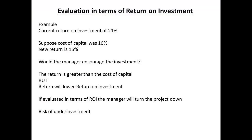We finished the first podcast by considering a problem with return on investment. Let us refresh by starting with this point. A manager has a current return on investment for a division of 21% and the cost of capital was 10%. Suppose a new investment projected a new rate of return on investment of 15%. The return is greater than the cost of capital, so there is no reason to turn down the investment. However, the new return is lower than the current return on investment, and if the manager is evaluated on return on investment, then the project will be turned down. This leads to underinvestment.